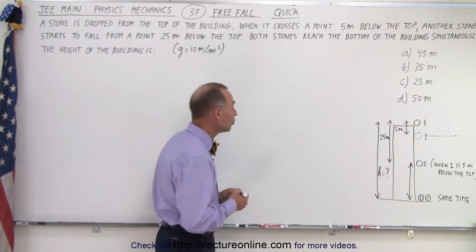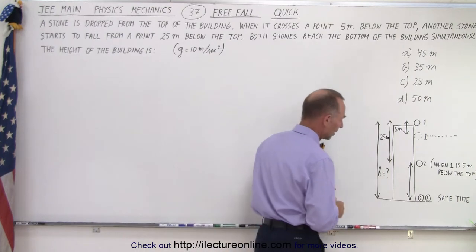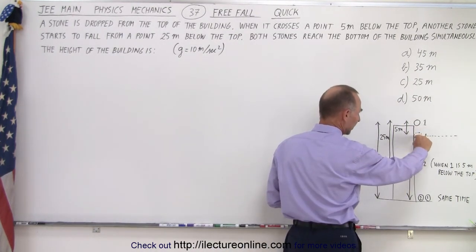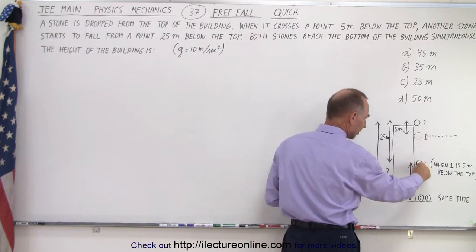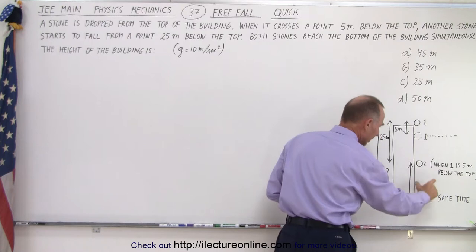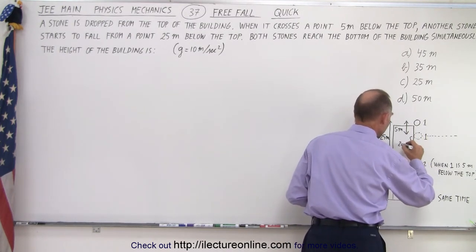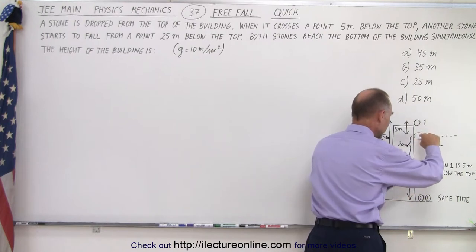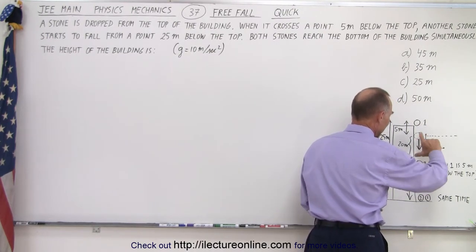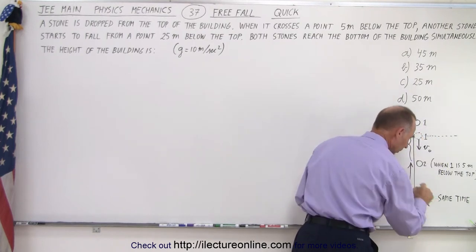The way you can think about it is this: notice that this stone drops from 0.5 meters below the building, and at the very same time, a second stone drops from 25 meters below the building, and they both hit the ground at the same time. Notice that they are 20 meters apart at this moment, but this one already has some initial velocity, and this one has no initial velocity.